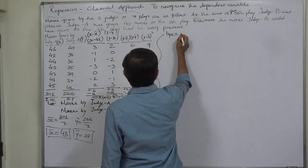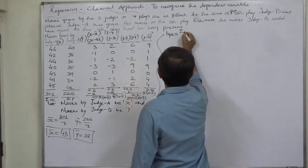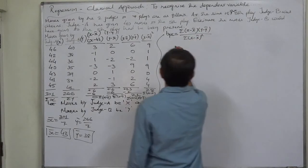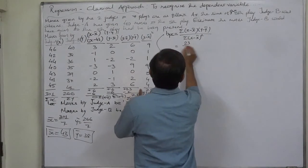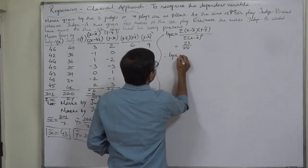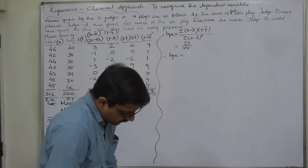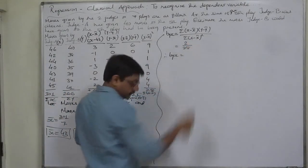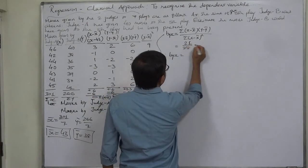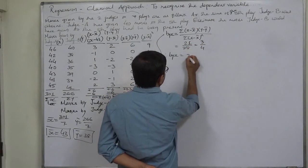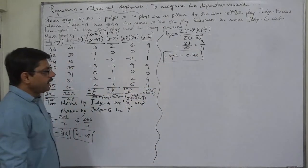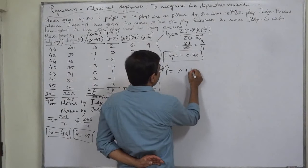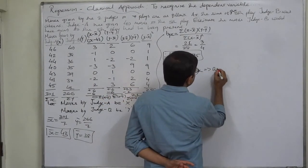Byx — the coefficient of regression of y on x — equals Σ(x−x̄)(y−ȳ) divided by Σ(x−x̄)², which is 21 divided by 28. Since 7 is a common factor, this simplifies to 3 by 4, which is 0.75.